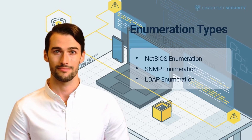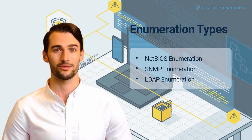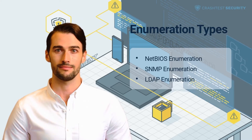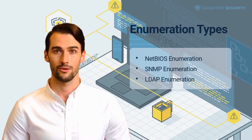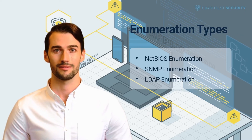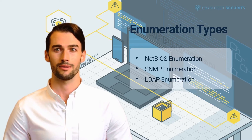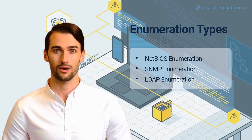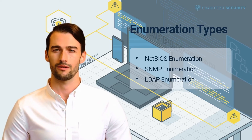LDAP Enumeration: The Lightweight Directory Access Protocol enables applications to access directory listings from directory services such as Active Directory. LDAP is usually integrated into the domain name system for quicker resolution of queries and an expedited lookup process. An attacker can anonymously exploit a directory scanner to query the LDAP service through port 389, gaining access to a host of information that can be misused to orchestrate social engineering or brute force attacks.